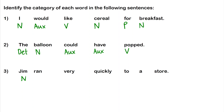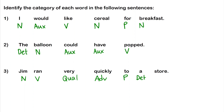In 'Jim ran very quickly to a store': 'Jim' is a noun (a proper name). 'Ran' is a verb. 'Quickly' is an adverb — it tells us how the running was done. 'Very' is a qualifier — it tells us how quickly, as in 'a little quickly' versus 'very quickly.' Qualifiers and adverbs pair together quite often. 'To' is a preposition, 'a' is a determiner, and 'store' is a noun.